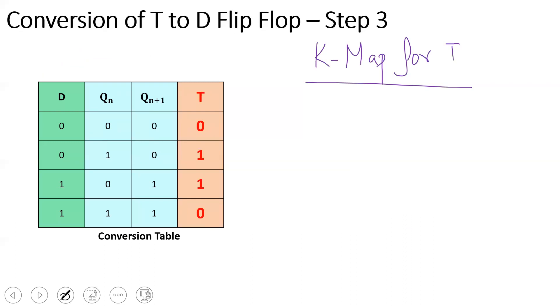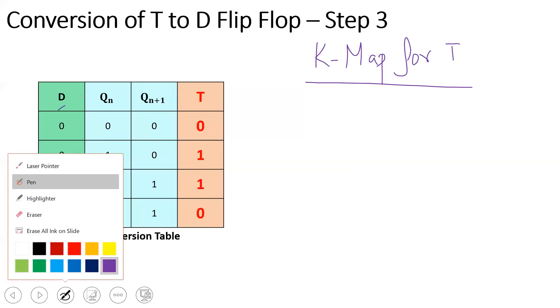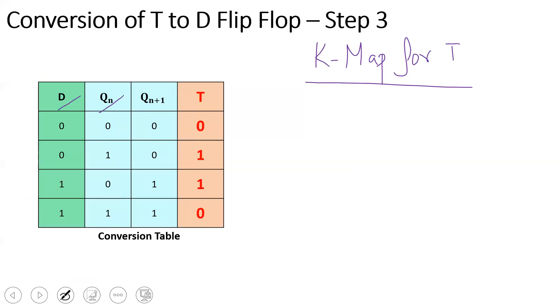Now, what variables does the Kmap use? The Kmap input is D and QN. The output is QN plus 1 — that is the next state. Consider a two-variable Kmap.